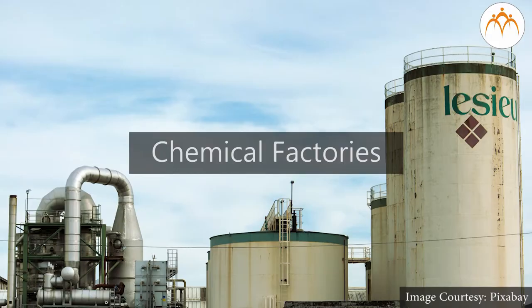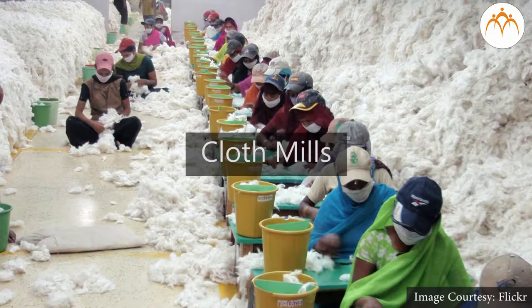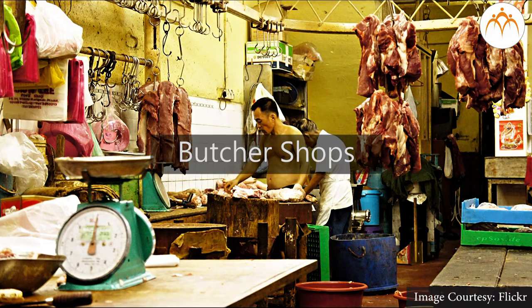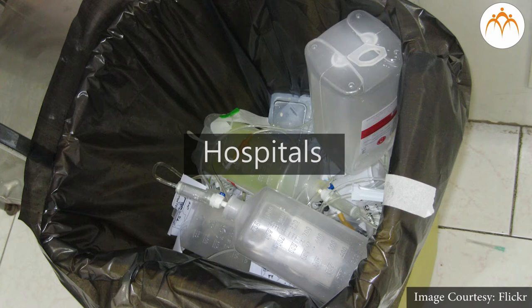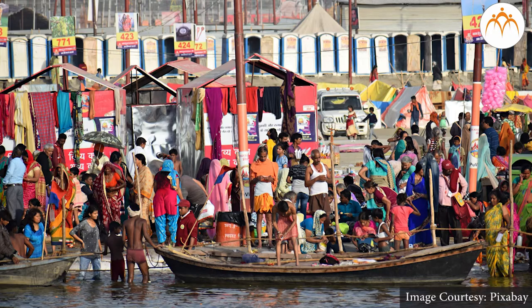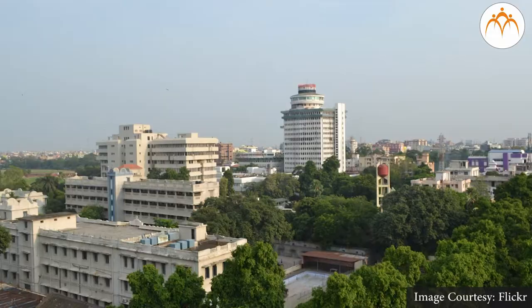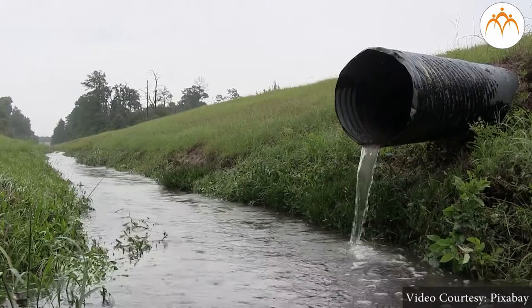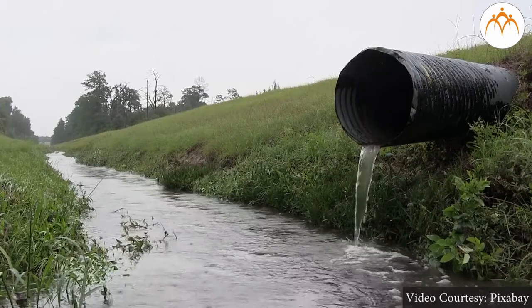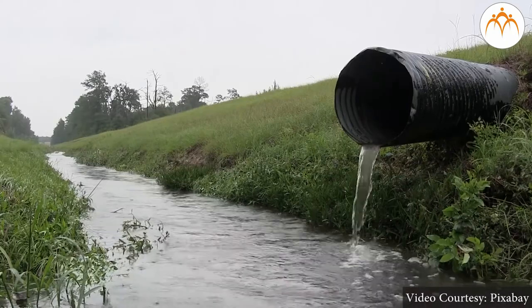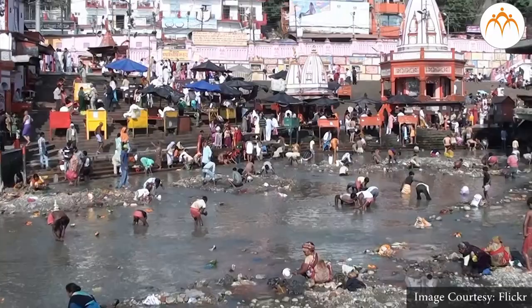Tanneries, chemical factories, cloth mills, distilleries, butcher shops, and hospitals in Kanpur, Prayagraj, Varanasi, and Patna release their garbage and waste into the river. Ganga has become a highly polluted river.